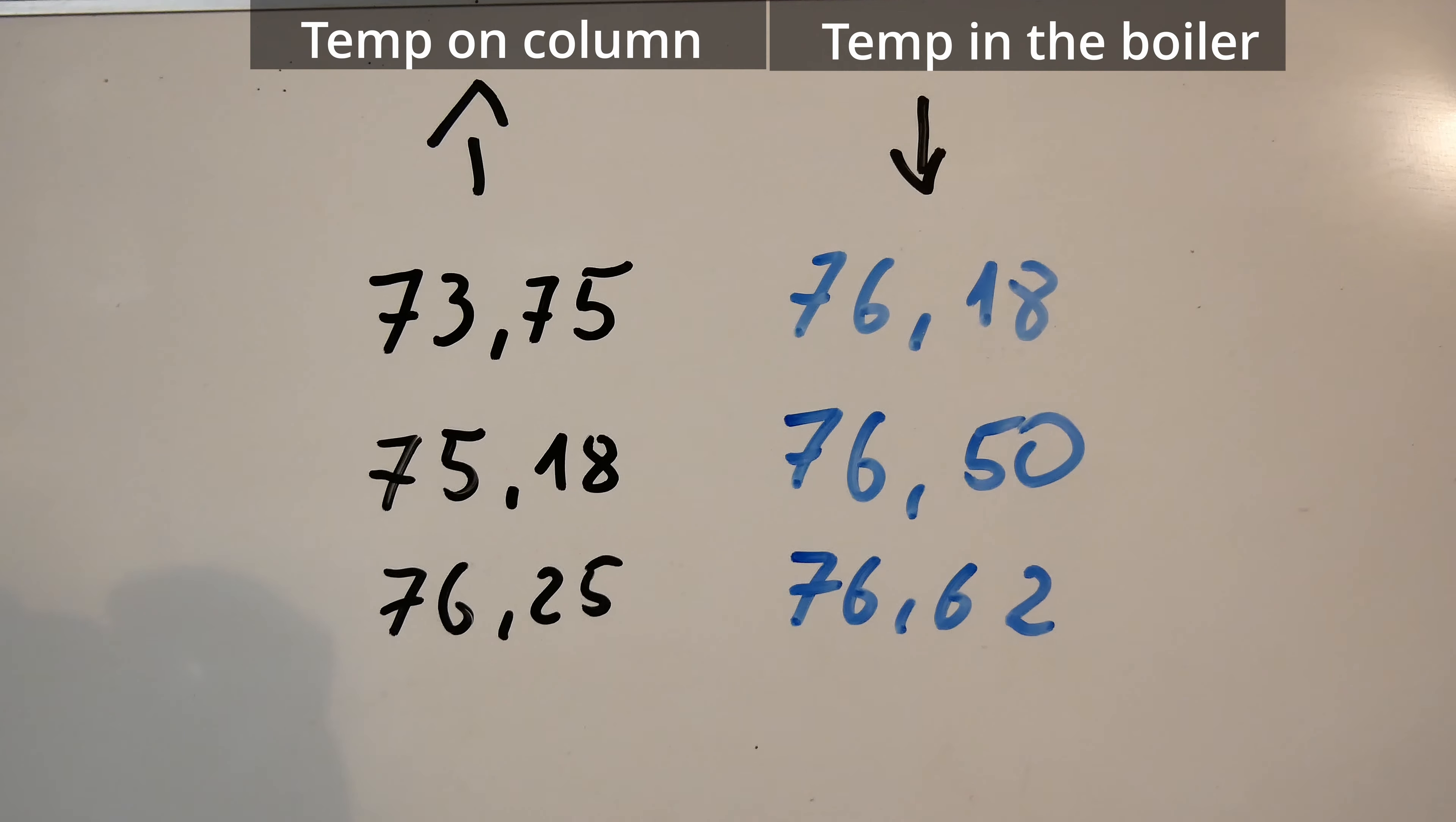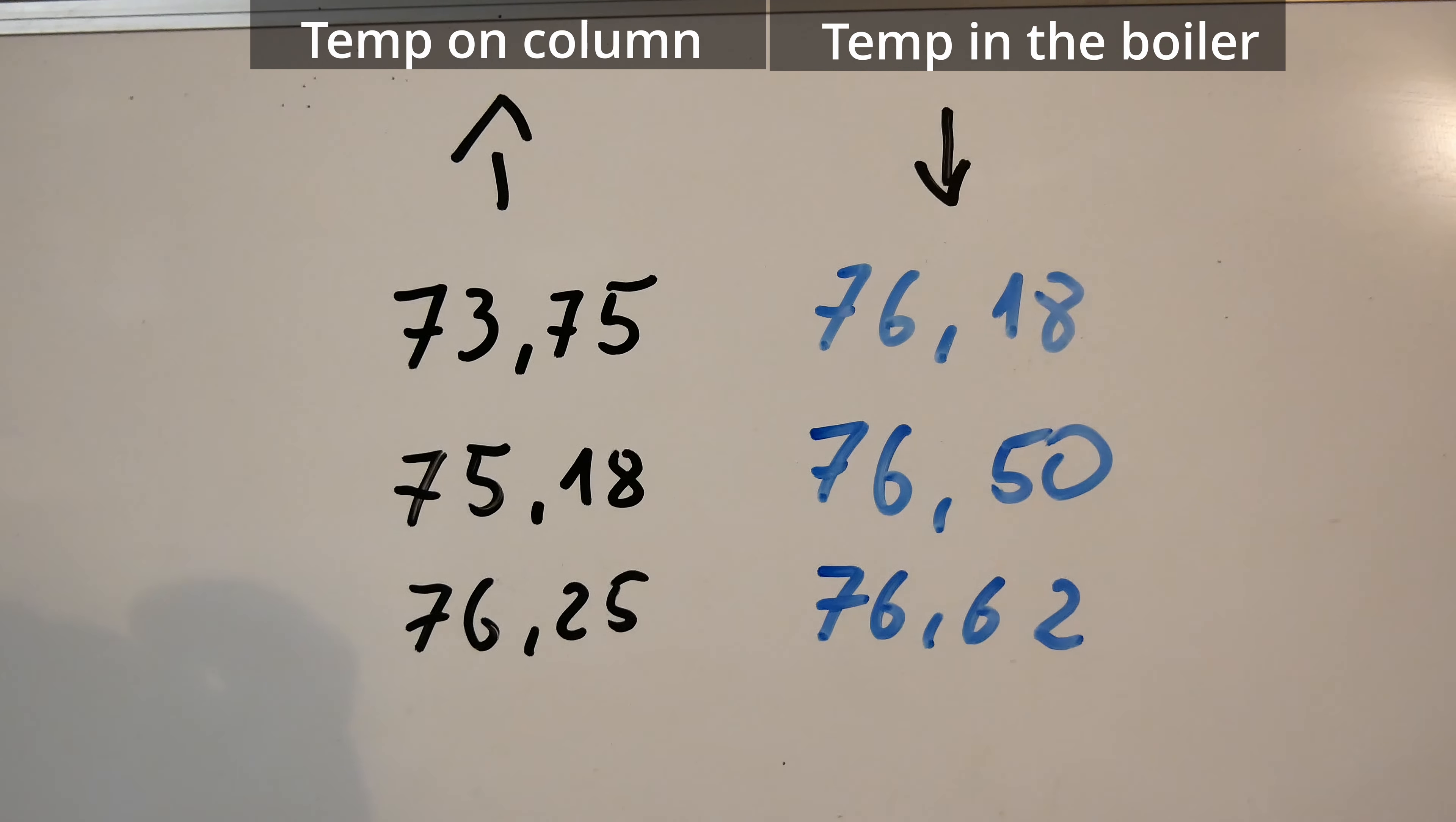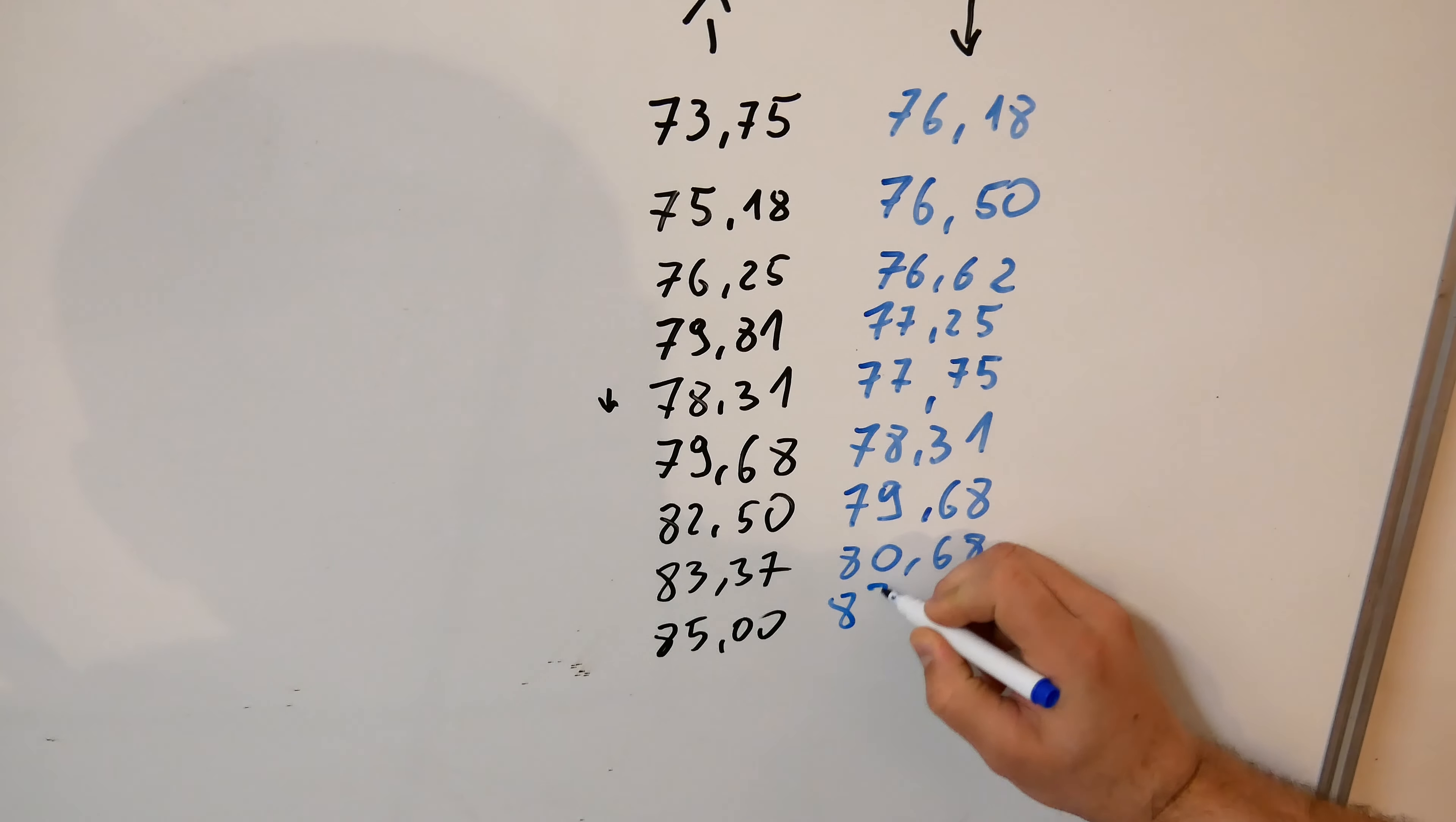To better control the temperatures in the boiler and on the column I recommend saving the current temperature measurements every 30 minutes. On the left you can see the temperatures in the column and on the right there are the temperatures in the boiler. As we can see temperatures slowly and steadily increase over time. We can then easily see if the temperature rises correctly during the entire process and if they don't drop.